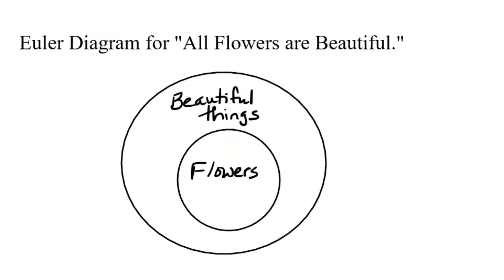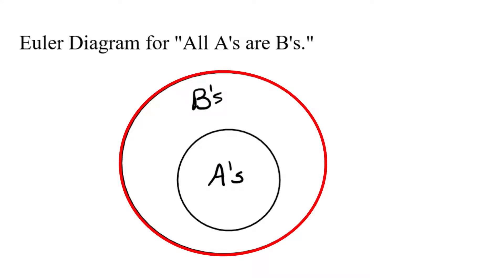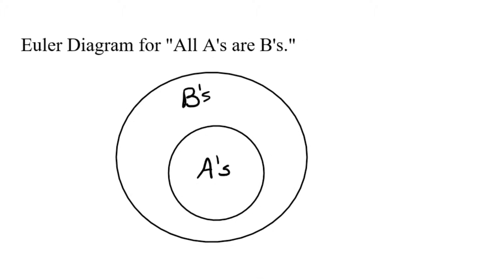In general, if you have a statement of the form 'all A's are B's,' then the characteristic A is going to be in the inner circle, and the characteristic B is going to be in the outer circle. If you're interested in how to draw Euler diagrams for statements of other forms, like 'some A's are B's,' there's another video on that.